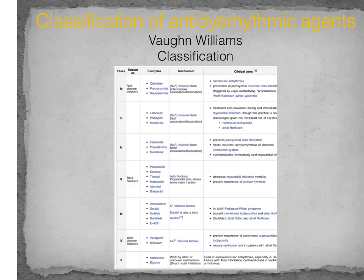Specifically, we talked about the cations — sodium, potassium, and to some extent calcium. From that basic understanding that we've developed, there's actually a classification system that we can classify different cardiac agents into, known as the Vaughan-Williams classification.